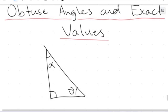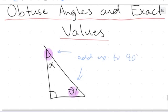When we set up a right angle triangle, this angle is 90 degrees, and the remaining two angles — since the angle sum of a triangle is 180 degrees — these two have to add up to 90 degrees to make up the remaining 180 degrees. So far we haven't actually dealt with any obtuse angles.